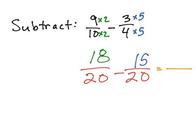So now I have a common denominator of 20. And 18 minus 15 is 3. So my final answer is 3 twentieths.